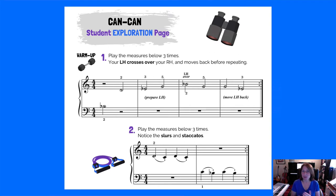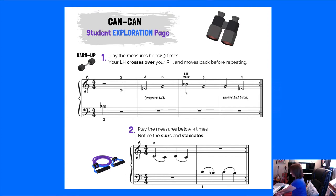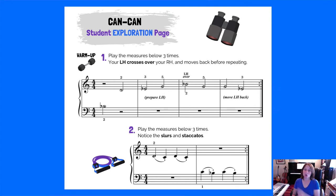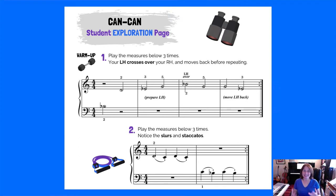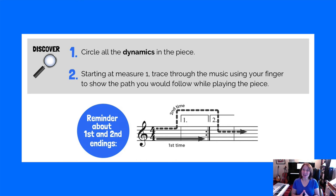Have the student find their own challenge spots — let them search for them. I call it 'finding your challenge spots,' and that makes them not feel intimidated. It's like: oh, I found it — now I'm going to work on that one little isolated area. The warm-up addresses that first challenge spot — the left-hand crossover. Play the measure below three times: your left hand crosses over your right hand and moves back before repeating. The second warm-up focuses on the two-note slur with staccato articulation, done in both the right and left hands.